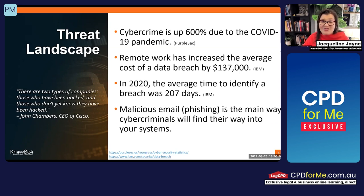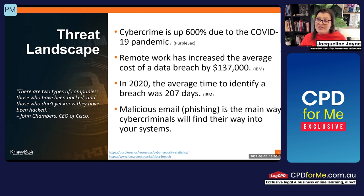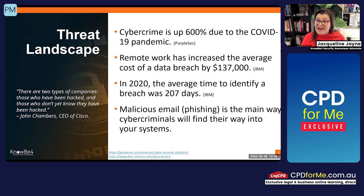In 2020, the average time to identify a breach was 207 days. What that means is, should a cyber criminal find a way into your organization's systems — which we'll talk about how they go about that — it could take, on average, maybe longer, 207 days for tech or people to think, hold on, something's not quite right here.